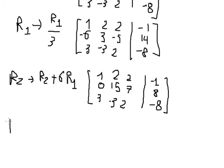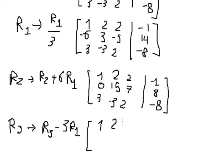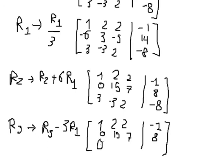For row number three, we need to minus three times row number one to cancel the three in here. So we have: three minus three gives zero; negative three minus three with number two gives negative nine; similarly negative four and positive five.